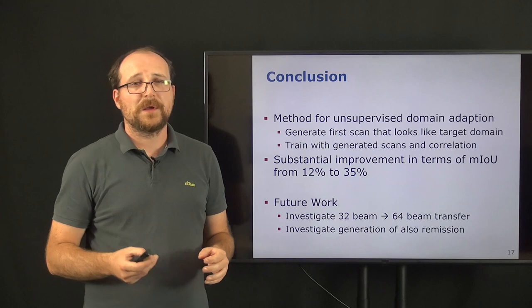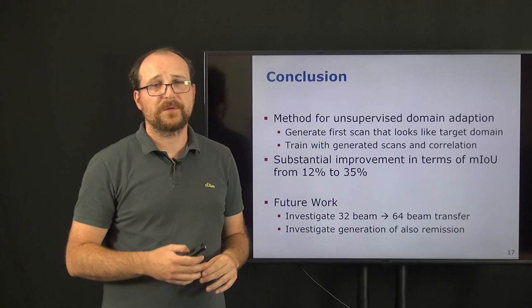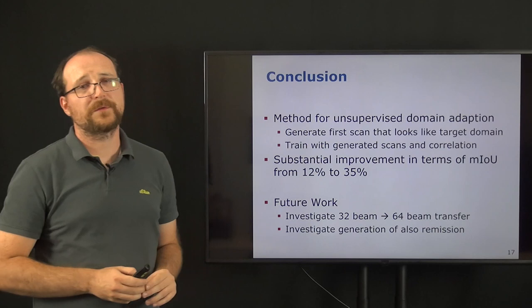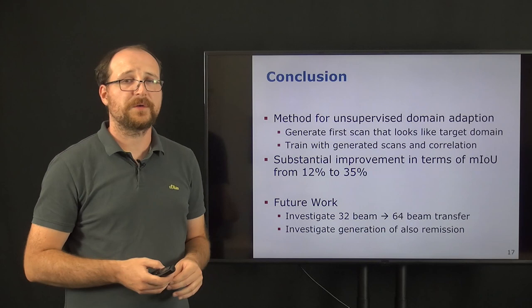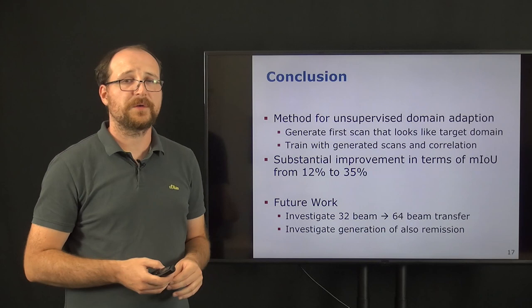In future, we not only want to investigate the opposite direction from moving from a 32-beam sensor with a wider field of view to a 64-beam sensor, but also want to investigate how we can also generate the remission information. Because remission is an important signal for the semantic segmentation approach, as it can maybe lead to better performance for, for instance, for traffic signs.